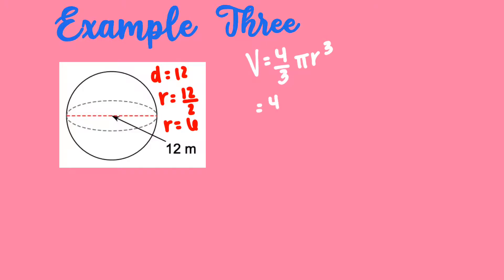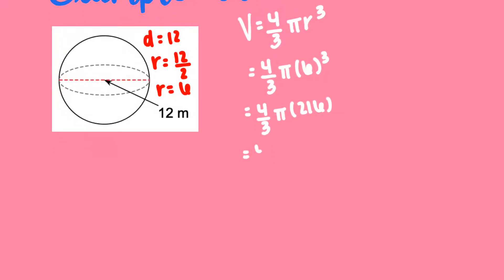So when I plug it into my formula, four-thirds pi times six cubed. Remember, that's six times six times six. If you have a calculator, you can plug it in. You may have to do it by hand if not. So then I have four-thirds pi. That's six cubed. Now it turns into 216. So I'm going to write them next to each other again. Four-thirds times 216. Pi is on the end. Please don't forget about your pi.